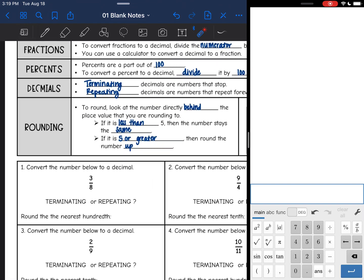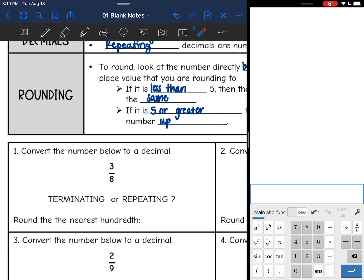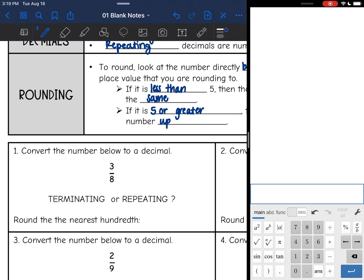Okay, so let's convert this decimal, or this fraction to a decimal, and then we will talk about rounding. So I need to convert this to a decimal. I'm going to do 3 divided by 8 in Desmos, and I get 0.375. And that decimal stops, so I know it's terminating.